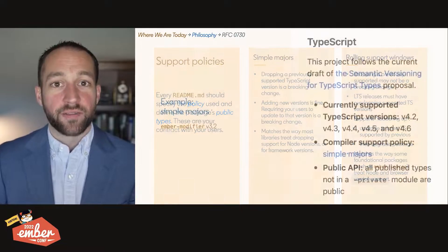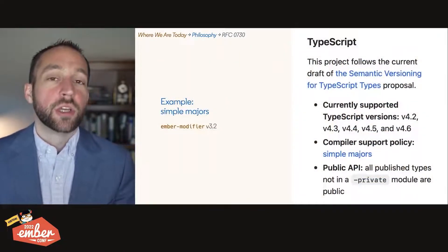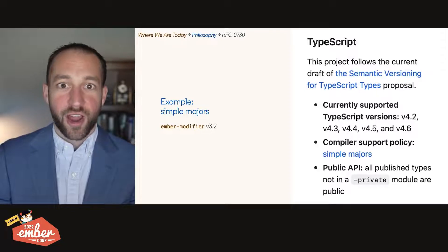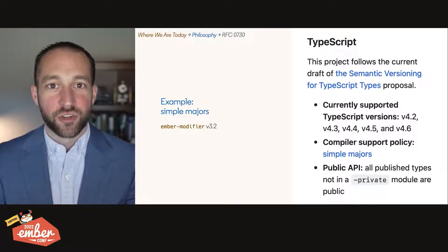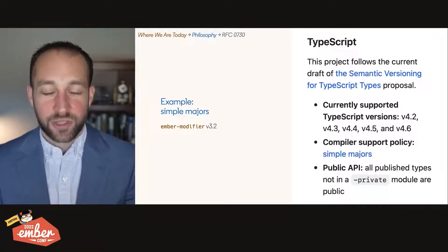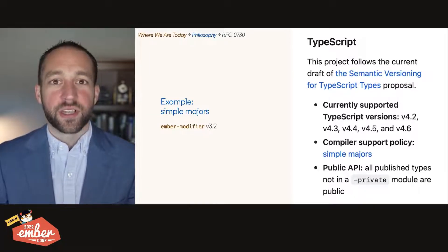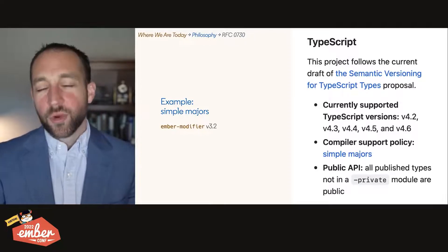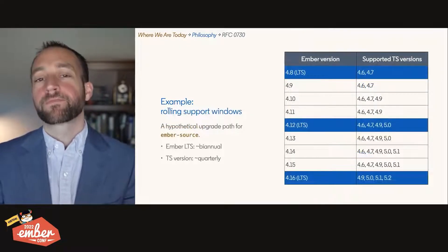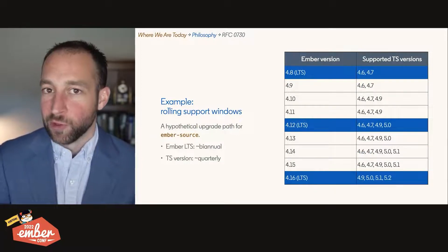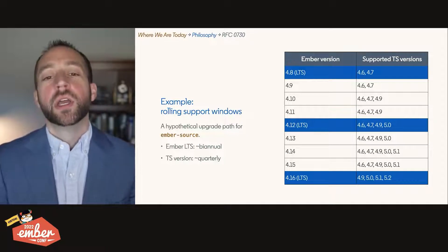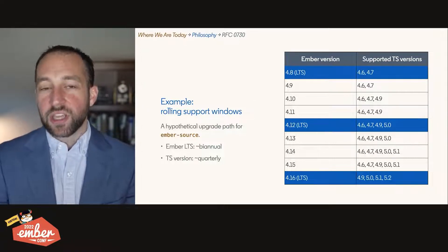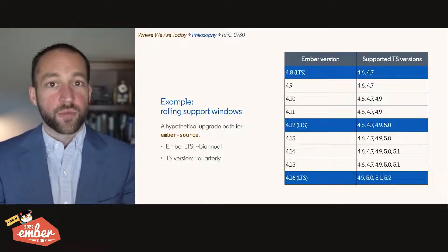Here's how this works in practice. Ember modifier is an ecosystem library using simple majors. It's currently at version 3.2, and if you look at its README, it says: we follow the current draft of the semantic versioning for TypeScript types RFC. We support TypeScript versions 4.2 through 4.6. We also test against Nightly and use a simple majors policy. Things are a little more complicated for Ember source. If we adopt the rolling support windows — and spoilers, we're doing that for Ember — given that Ember releases every six weeks and every fourth release is a long-term support release, and TypeScript releases once a quarter, we can imagine that Ember starts publishing types using this policy in Ember 4.8, supporting TypeScript 4.6 and 4.7.